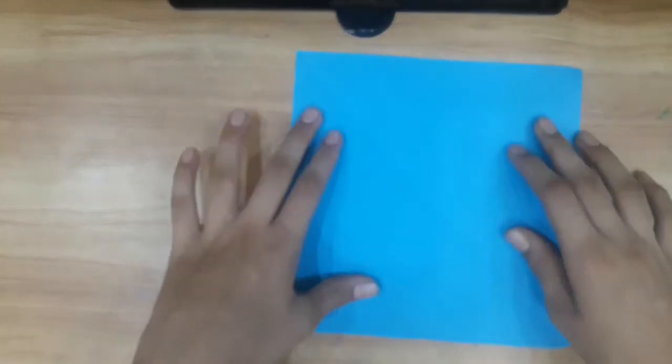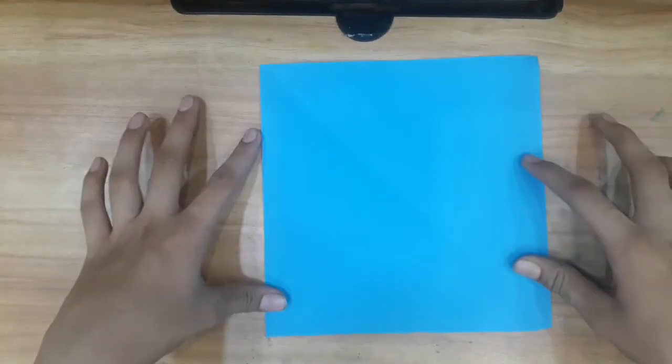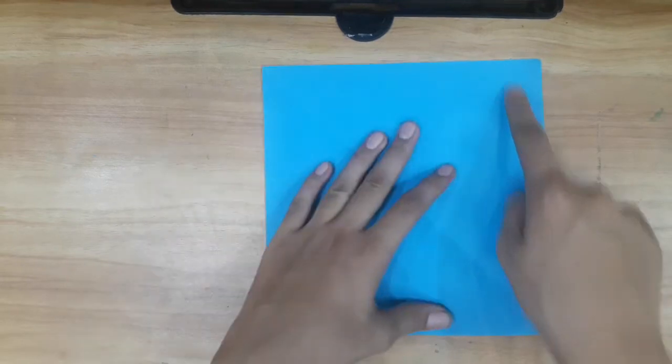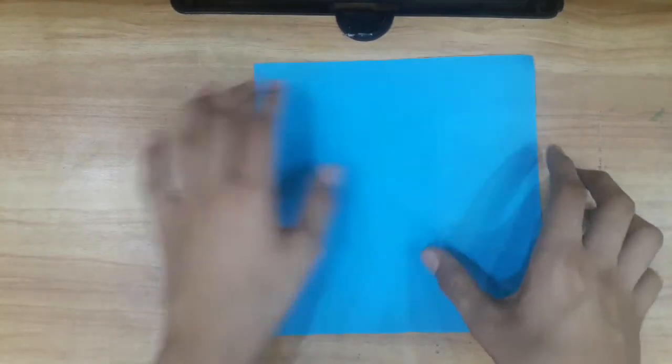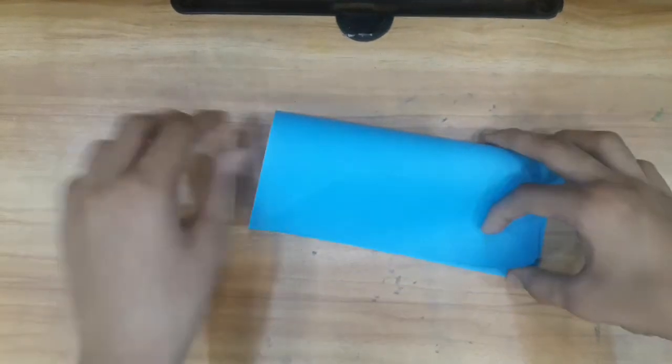First of all, I have taken a square sheet of paper. It is 8 inches by 8 inches. So guys, first of all we have to fold it in half like this.